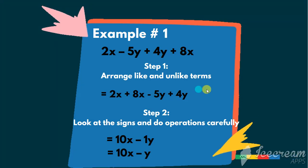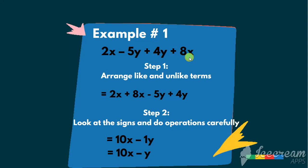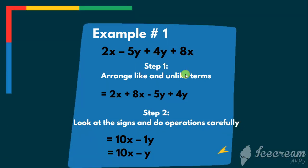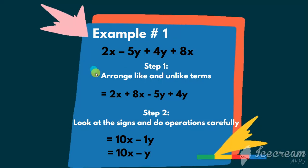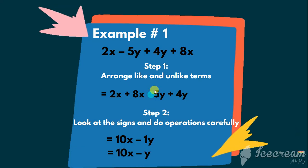Example number 1: 2x minus 5y plus 4y plus 8x. Step 1, arrange like and unlike terms. So we have arranged the like and unlike terms. So our answer is 2x plus 8x minus 5y plus 4y.